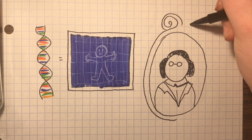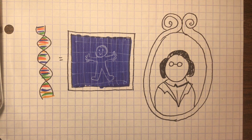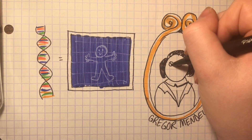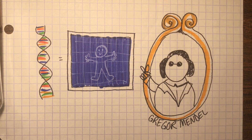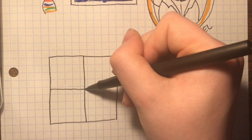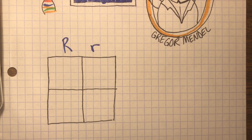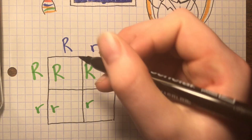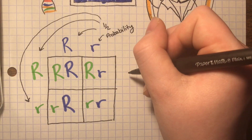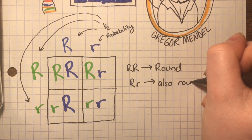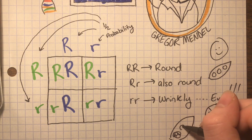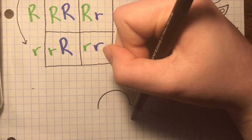The thing about Mendelian genetics is that which alleles are expressed are governed by simple dominance. If we have a round allele from either parent in the seed, the peas will be round no matter what. This is explained with a Punnett square — basically a grid that represents the two parents and all possibilities of their offspring. Big R (round) is dominant, so RR is round, Rr is also round, but little r little r is wrinkly. That is what simple dominance means.